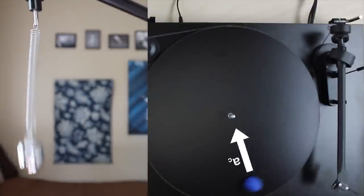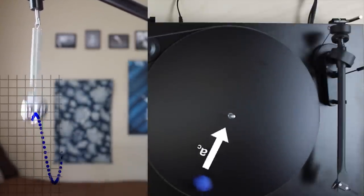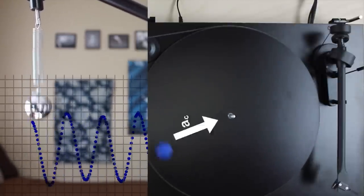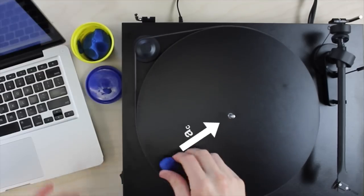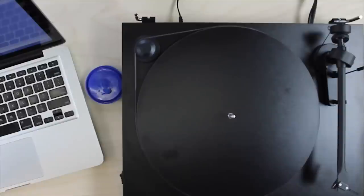Since our spring only moves in one spatial dimension, we would like to know how our object moving around a circle moves in one spatial dimension. Circles are, by definition, two-dimensional, so we need to project our motion down to one dimension.